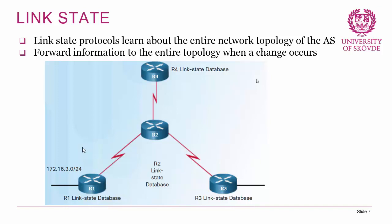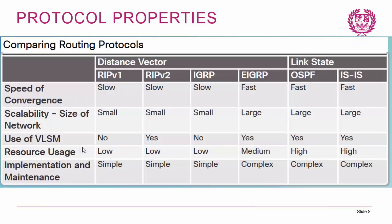Before going on to looking at the individual protocols, let's have an overview of some protocol properties. When we talk about routing protocols, there are some aspects that are really important to discuss. First, speed of convergence — convergence in the domain of routing protocols is the speed at which all routers have the same view of the topology, when all routers are aware of the best path to every network in the AS. Distance vector protocols are generally slow — RIP version 1 and 2 are slow, version 1 is deprecated. IGRP is also slow, but the Cisco proprietary EIGRP contains enhancements that make the convergence speed quite fast. The link state protocols, OSPF and IS-IS, are also fast to converge.